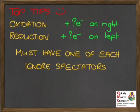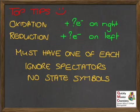Don't forget to ignore any spectator ions. If you're given the whole balanced equation, check whether anything is completely unchanged in terms of its charge. Also note that we don't put state symbols into ionic half equations — they appear in normal chemical equations but not here.